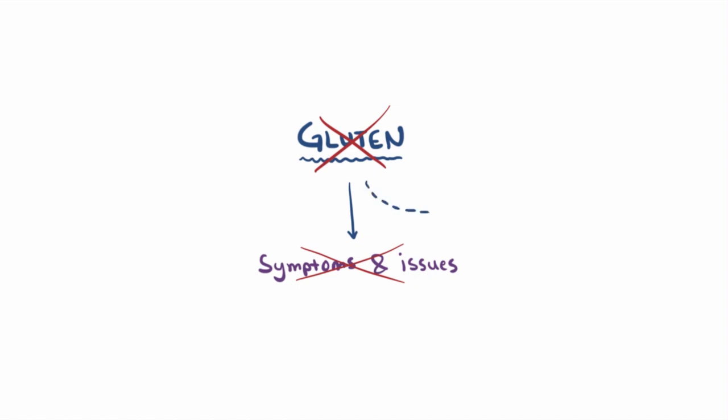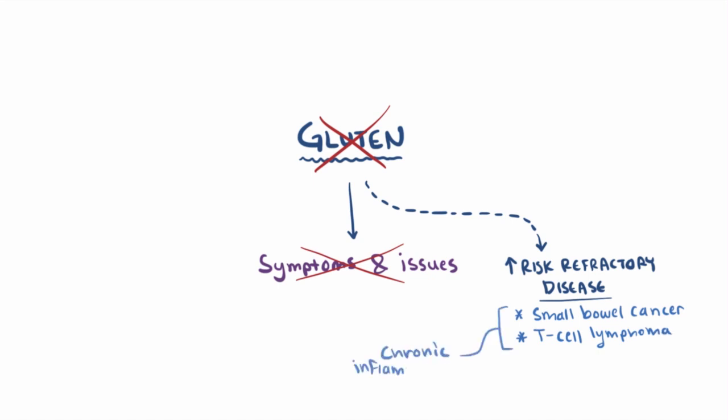For some patients that start to adhere to a gluten-free diet, even for many years, there's still an increased risk of refractory disease, like small bowel cancer and T-cell lymphoma. Presumably, this is due to inflammation and immune system activation over time.